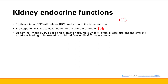Next is dopamine. Dopamine is made by PCT cells — proximal convoluted tubule cells — and promotes natriuresis. At low levels, it's going to dilate both the afferent and efferent arterioles and increase renal blood flow. GFR is going to stay the same because you're increasing inflow but also increasing outflow. So GFR stays constant even though you have increased renal plasma blood flow. At higher levels, dopamine actually leads to vasoconstriction.